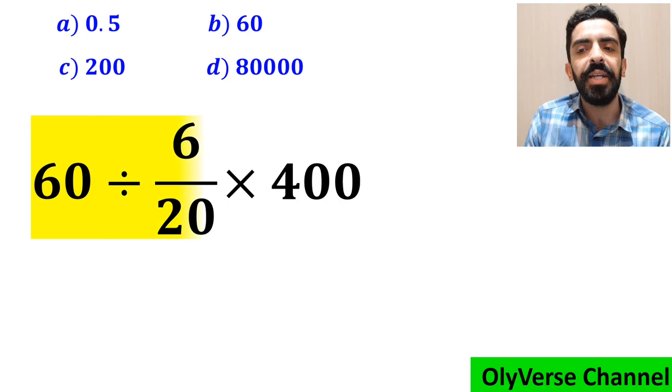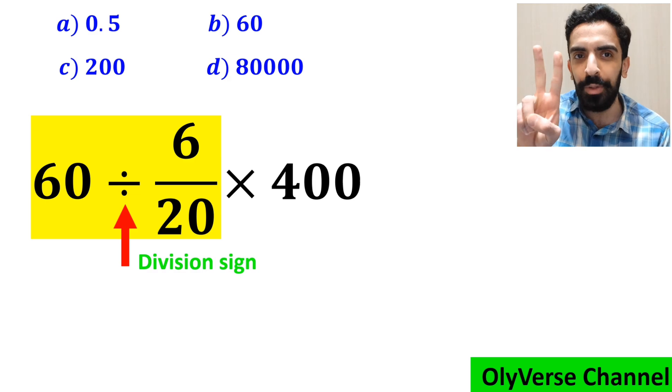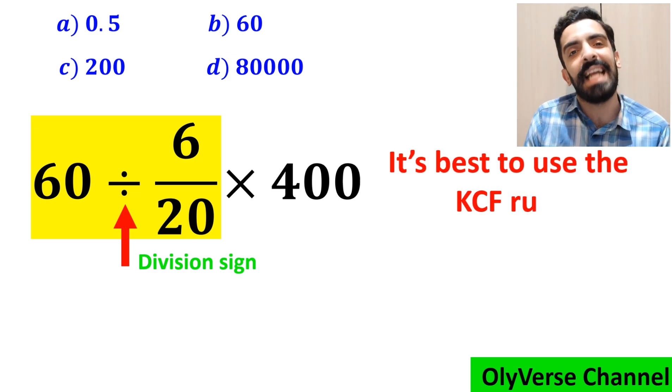First we perform the division between 60 and 6 over 20. Whenever we see a division sign between two terms, it's best to use the KCF rule.